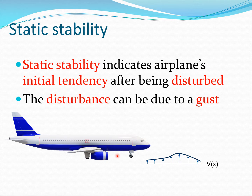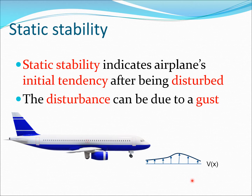Let us take a look at a typical airplane in cruise flight. Static stability is essentially a concept which indicates the airplane's initial tendency after being disturbed. The word initial tendency is very important. The disturbance can come from a source such as a gust — a velocity variation in the atmosphere that hits the aircraft. What you essentially want is that after this disturbance hits the aircraft, it can come back to its starting position. Stability tries to characterize this concept for an aircraft.